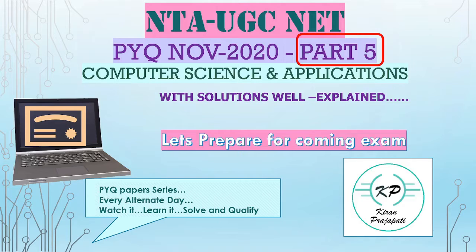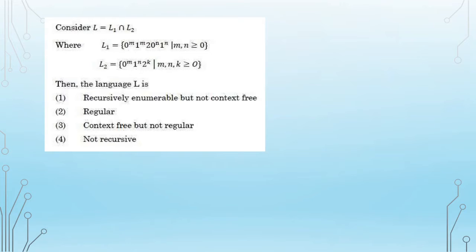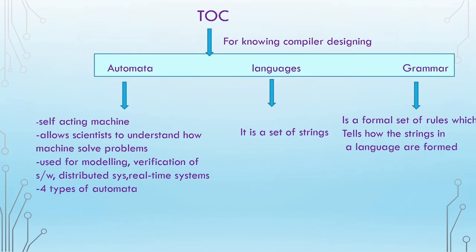Let's get started. The first question: consider L = L1 ∩ L2, where L1 and L2 are given string languages. They want to determine whether the language L is recursively enumerable but not context-free, or regular, or context-free but not regular, or not recursive.